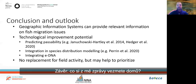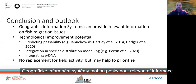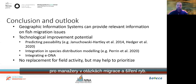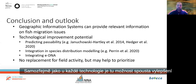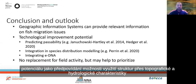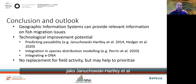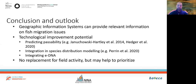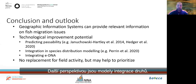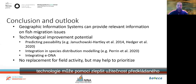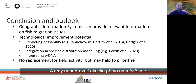Concluding: the take-home message from my talk should be that geographic information systems can provide relevant information for managers on fish migration and dispersal issues. There is, as with all technology, a lot of improvement potential — like predicting the passability of structures using topographic and hydrological characteristics, as Danukovsky, Hartley and others, or Richard Hedger and others did. Another perspective is to integrate species distribution models. Also, recently developed environmental DNA technology can help to improve the usefulness of the presented approaches. Finally, I want to emphasize that all digital and virtual analyses depend on field data — this does not replace activity on the ground, but it might help to prioritize and use resources more efficiently.